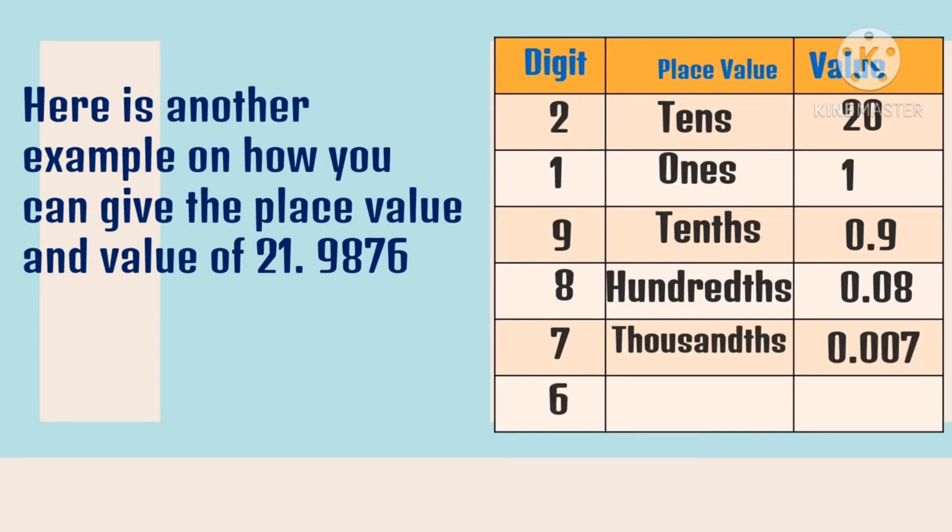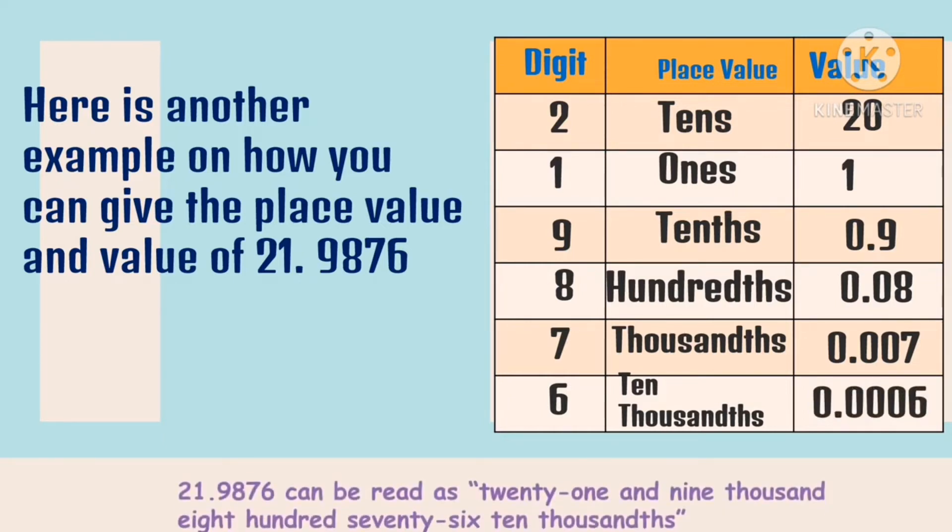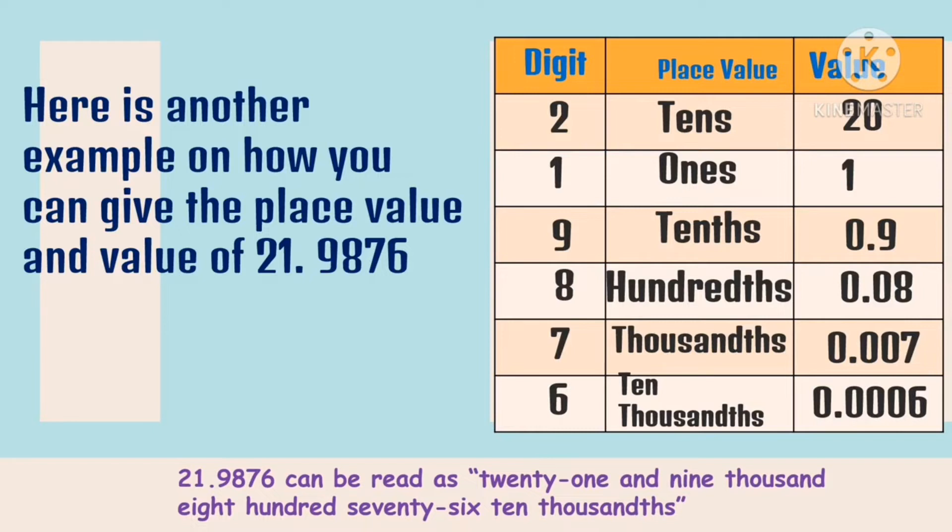And lastly, the digit six. The place value of six is ten thousandths and its value is six ten thousandths. We read the number as twenty-one and nine thousand eight hundred seventy-six ten thousandths.